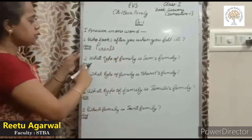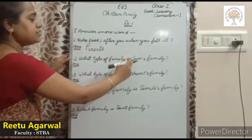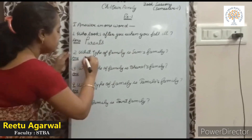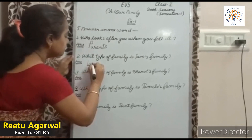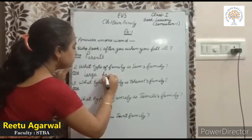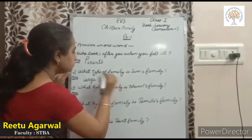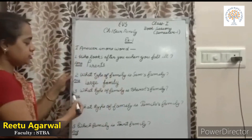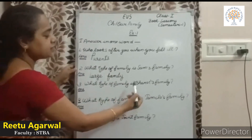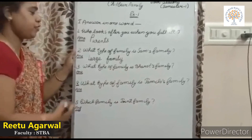The second question is: what type of family is Sam's family? Large family. And question number three: what type of family is Bharat's family? Bharat's family is joint family. So you have to write: joint family.